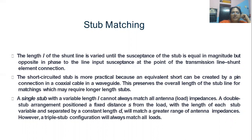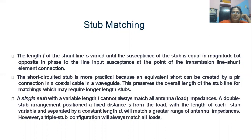The length L of the shunt line is varied until the susceptance of the stub is equal in magnitude but opposite in phase to the line input susceptance at the point of the shunt element connection. The short circuit stub is more practical because an equivalent short can be created by a pin connection in a coaxial cable or in a waveguide. This preserves the overall length of the stub line for matching, which may require longer length stubs.